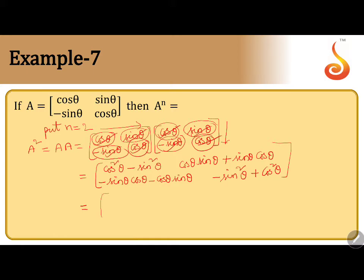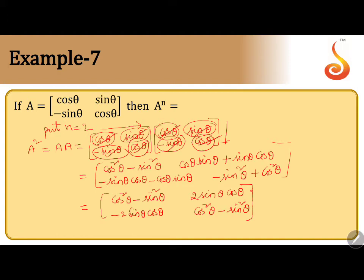This gives cos²θ minus sin²θ for the diagonal entries. Writing in order: sin θ cos θ plus sin θ cos θ equals 2 sin θ cos θ, and minus 2 sin θ cos θ for the off-diagonal. Applying formulas: cos²θ minus sin²θ = cos 2θ, and 2 sin θ cos θ = sin 2θ, minus 2 sin θ cos θ = -sin 2θ, cos²θ minus sin²θ = cos 2θ.